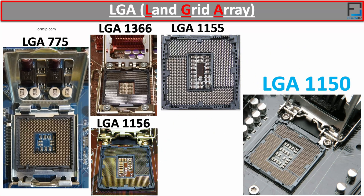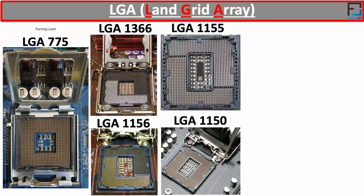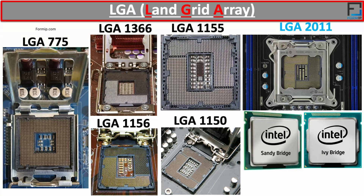The LGA-1150, called Socket H3, has 1,150 pins and was released in 2013. It supports both Haswell and Broadwell-based microprocessors, succeeding the LGA-1155. The last Intel socket we'll cover is the LGA-2011, also known as the R-Socket. It contains 2,011 pins and was also released in 2011 — what a coincidence! It is the successor to the LGA-1366 and was designed for high-performance CPUs based on Sandy and Ivy Bridge architectures.